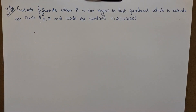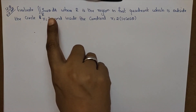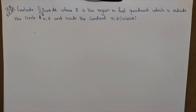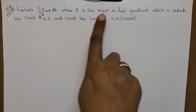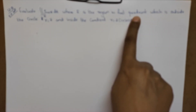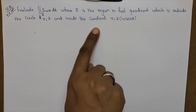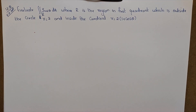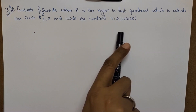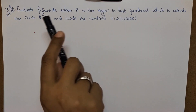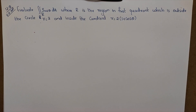Evaluate double integral over region R of sin theta dA. Where R is the region in the first quadrant, which is outside the circle r equal to 2 and inside the cardioid r equal to 2 into (1 plus cos theta). Evaluate this integration.